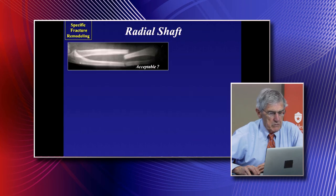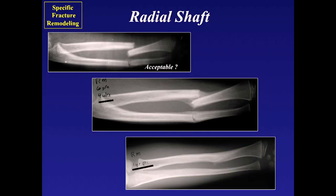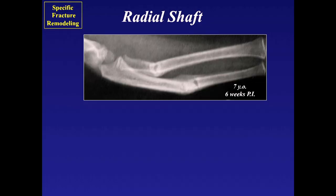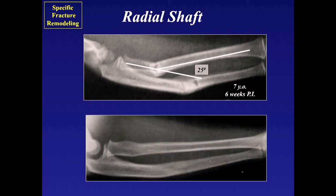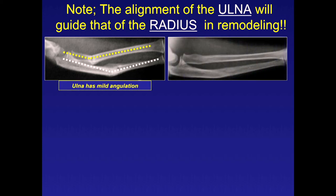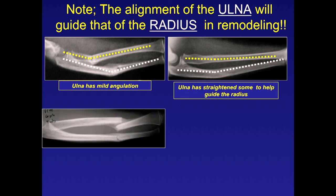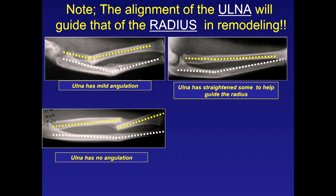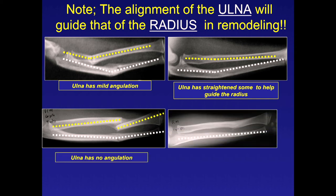Radial shaft fractures—the ulna guides the radius. If the ulna is not aligned, it will guide the radius in remodeling; if it's crooked, you'll still have some angulation. But in our patient here, the ulna is completely straight and served as a guide, resulting in complete remodeling of the radius.